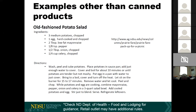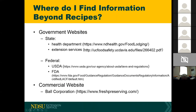Additional information can be found at government websites. The state health department — specifically the food and lodging department — has guidance for health inspections and laws required for processing. Extension services are also valuable; I highlight a UC Davis file here along with the NDSU resources already mentioned. At the federal level, we have USDA and FDA — I recommend scanning FDA for acid and acidified foods to see all the available information.